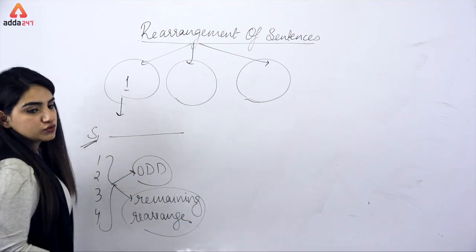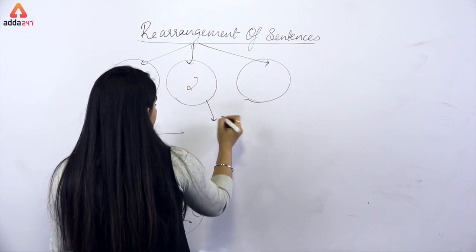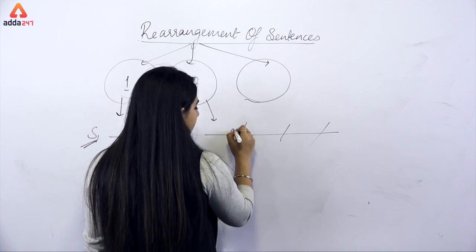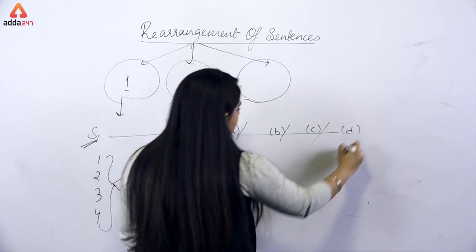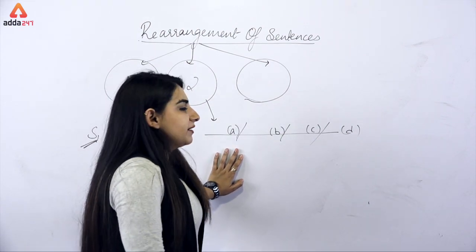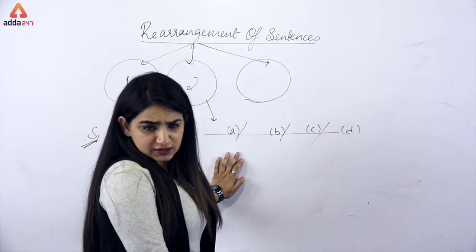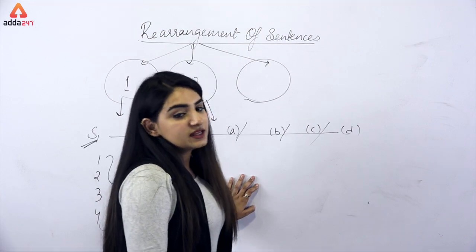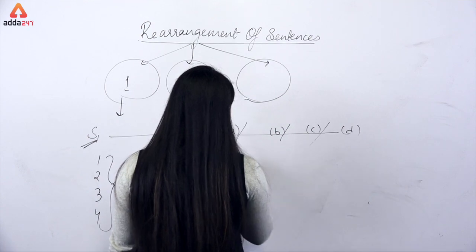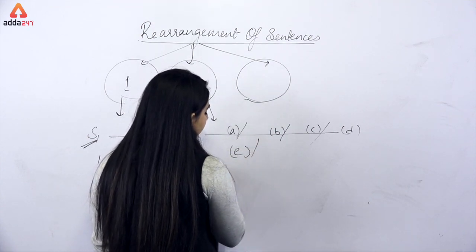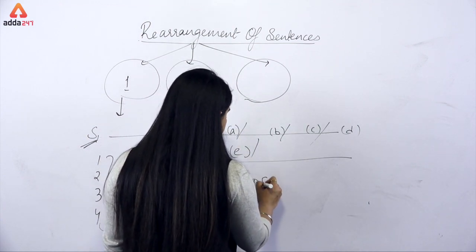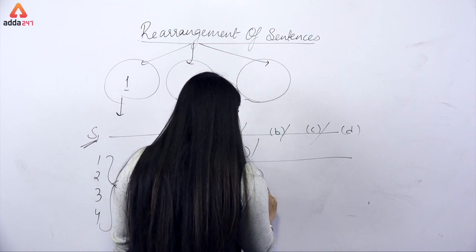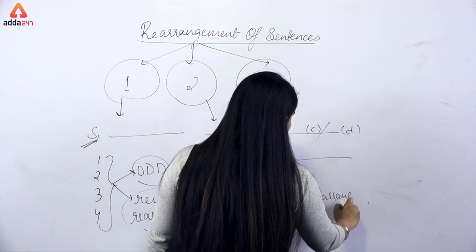The second pattern, which you may have seen in exams, is slash-based questions — a statement is given in slashes, marked A, B, C, D. You have to select which option forms the perfect sequence. First of all you have to find out the odd sentence, and then rearrange the remaining ones.